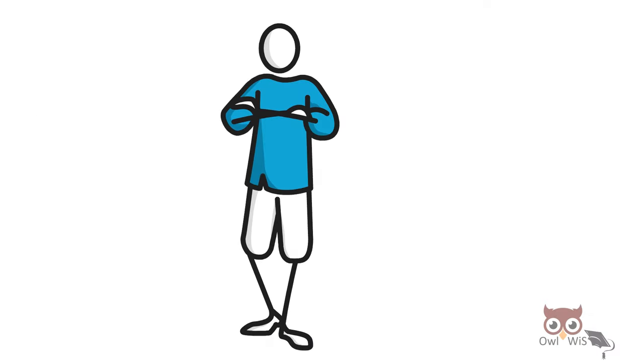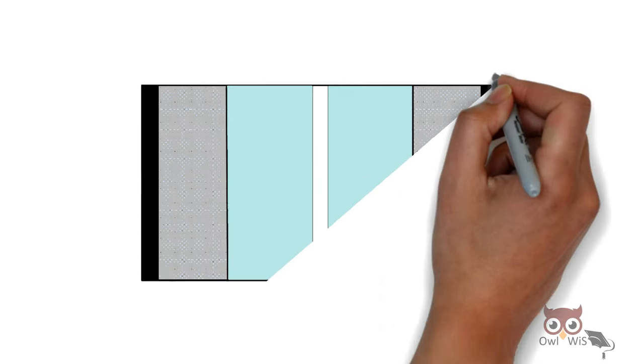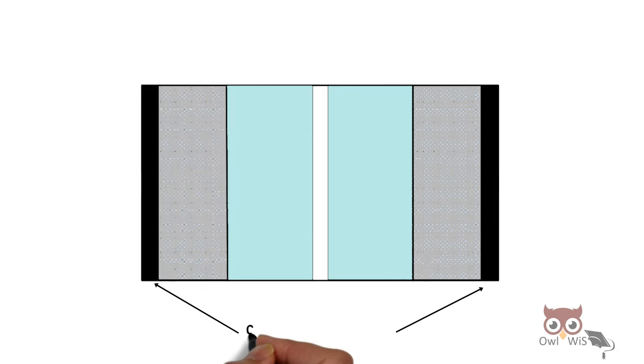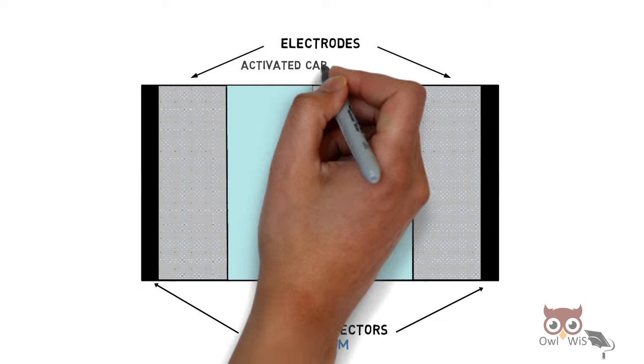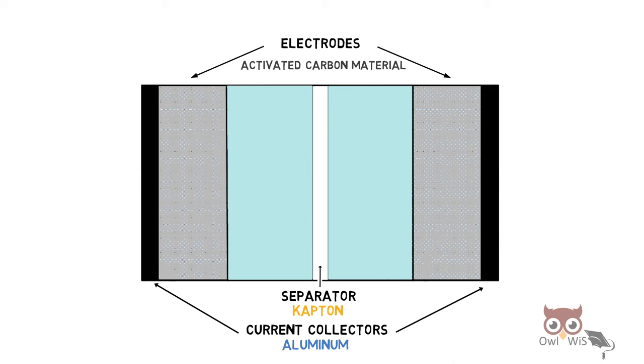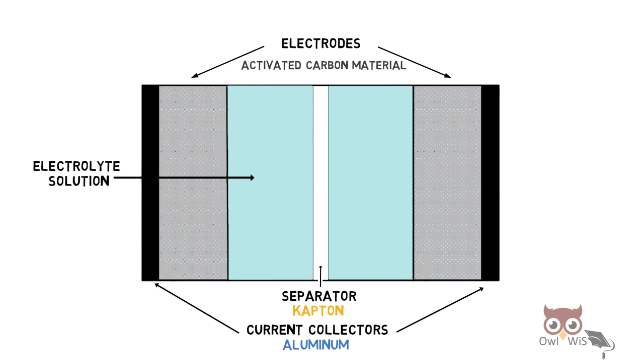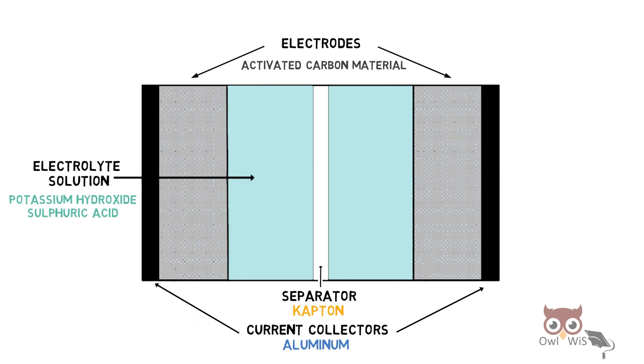Let us see what is inside a supercapacitor. It consists of current collectors made of aluminum, electrodes made from activated carbon material, a separator made from Kapton, and electrolyte solution made from potassium hydroxide or sulphuric acid.